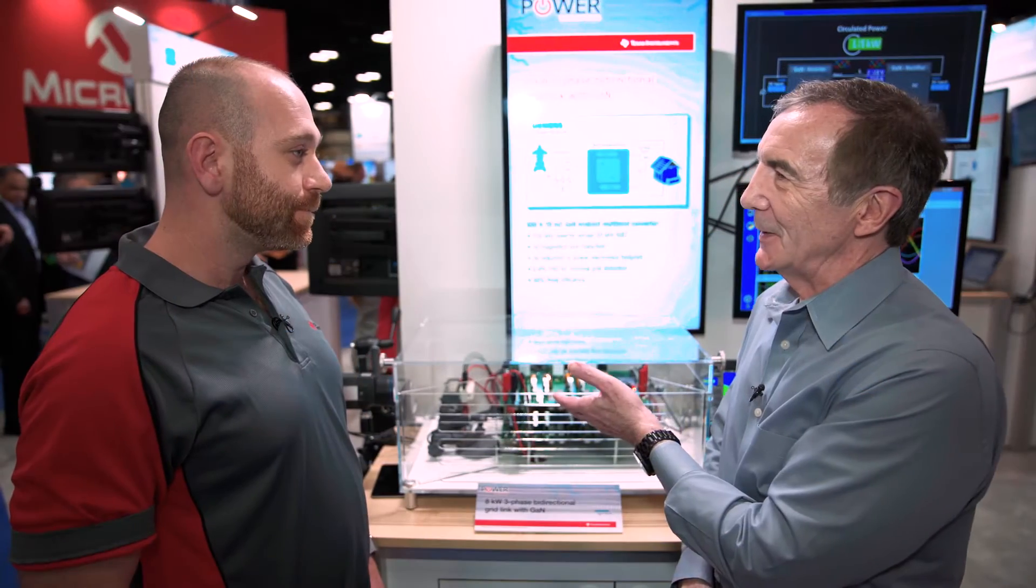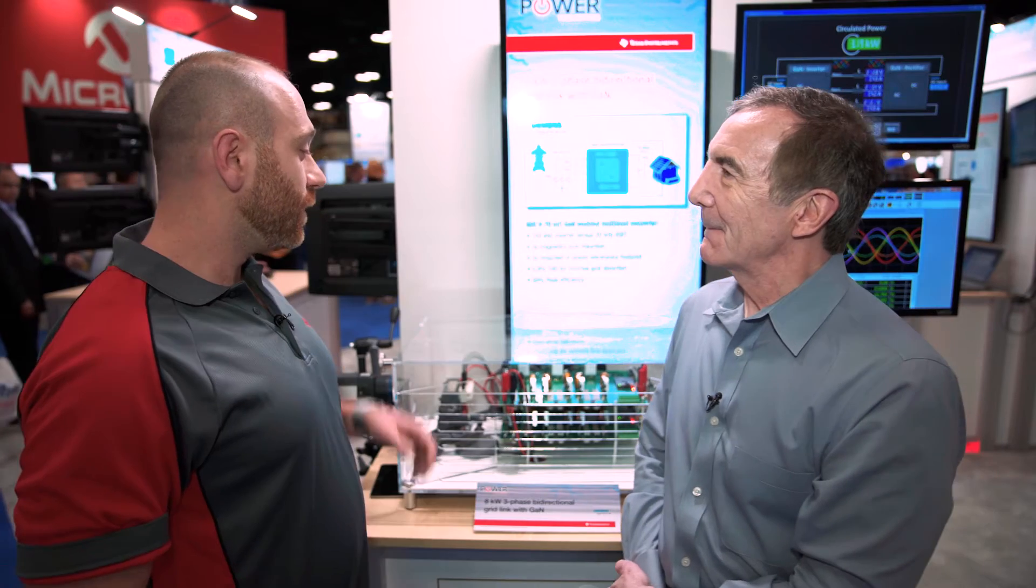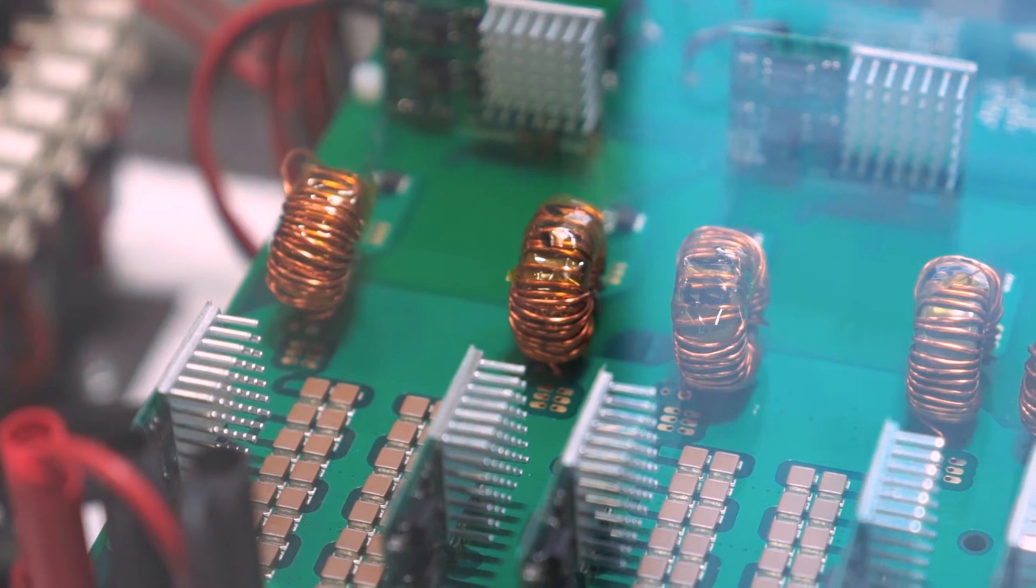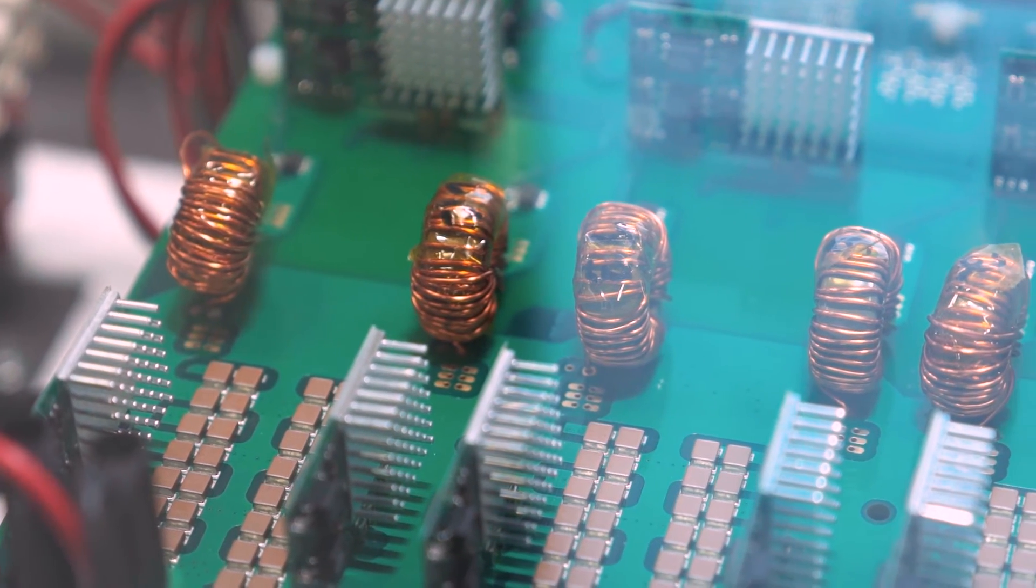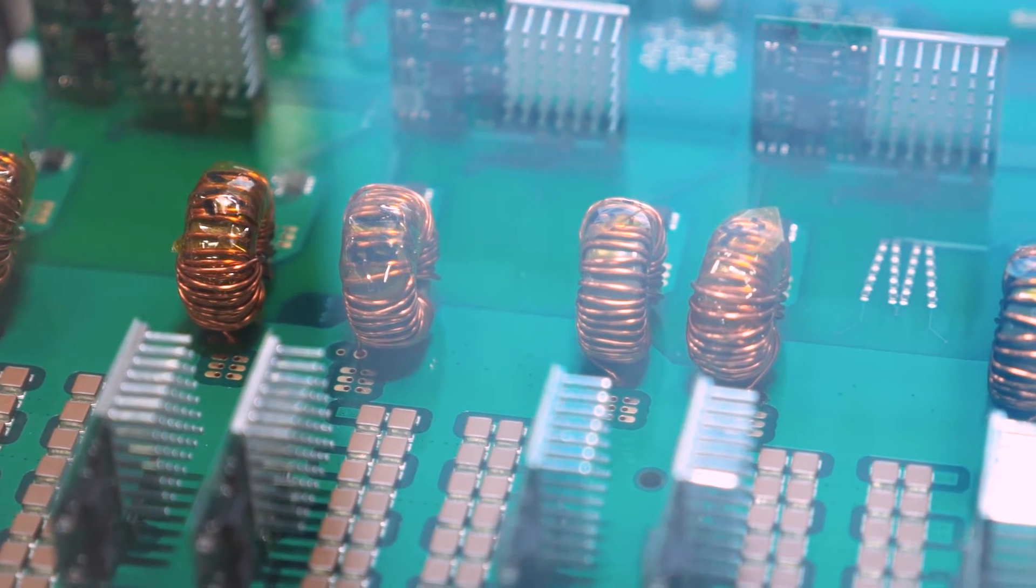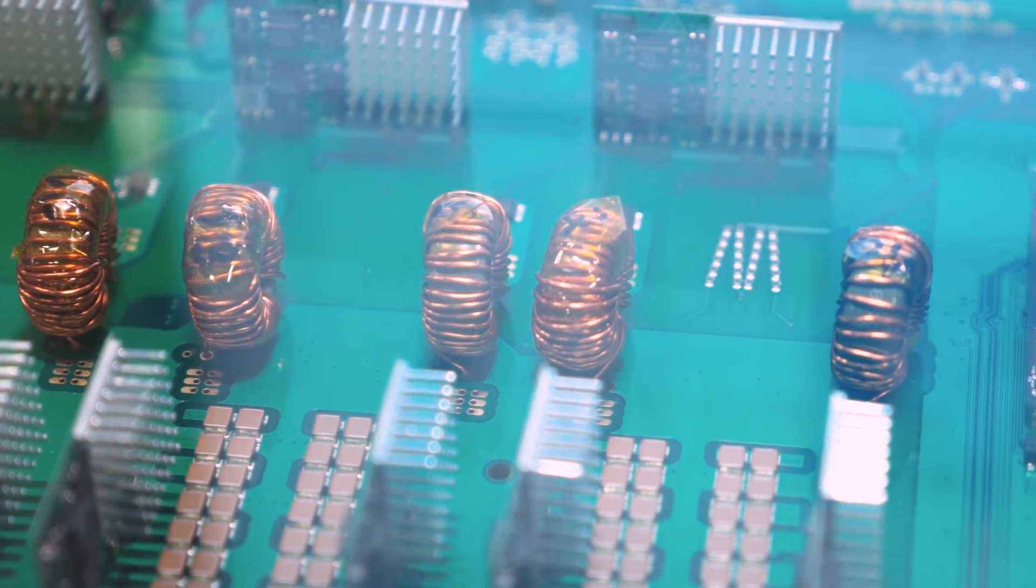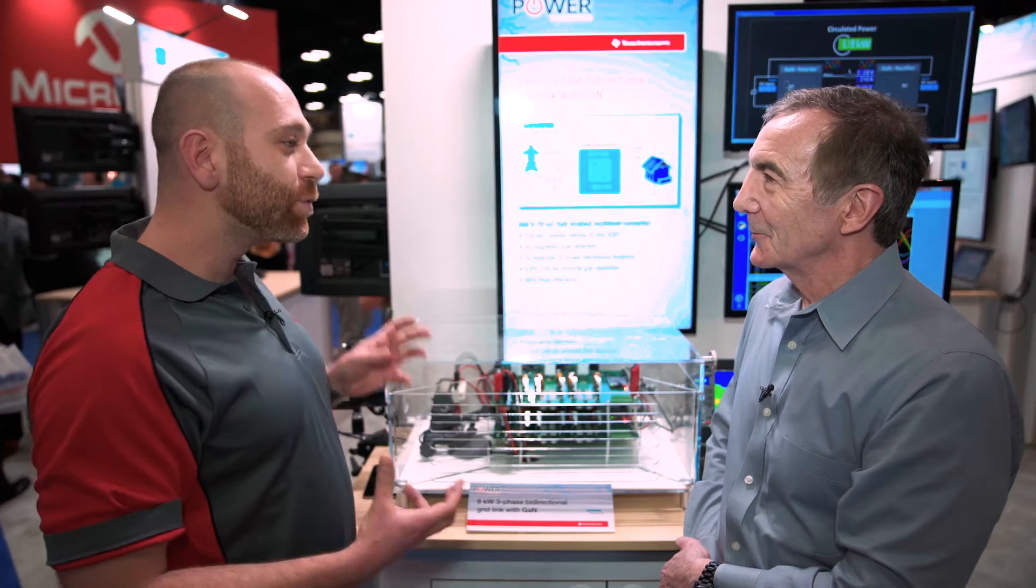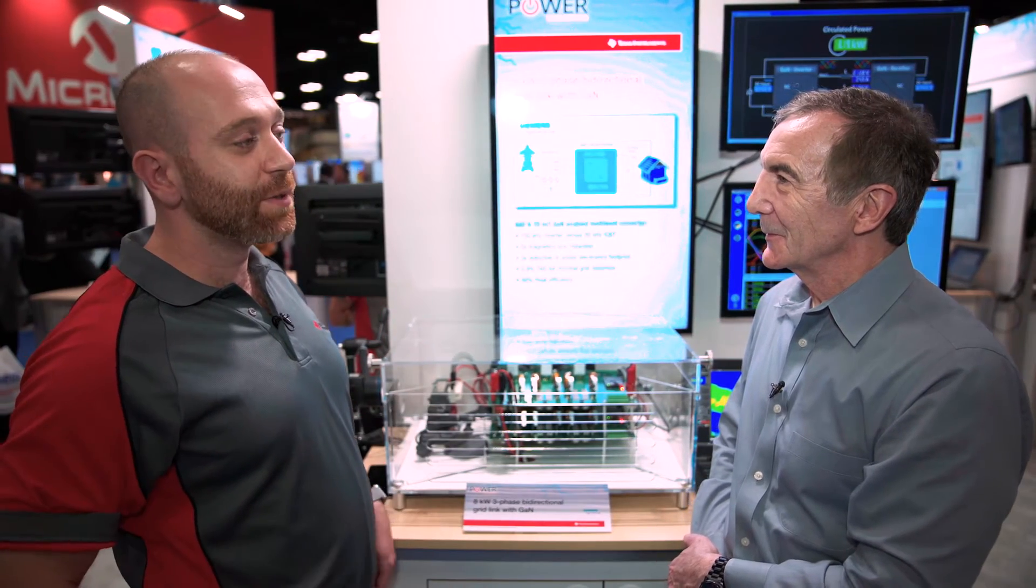If you were to try to do this with IGBT, how big would this be? Well, the inductors you can see here could be at least five times larger at 10 kHz. What about the whole package? Well, the package itself, if you look at the power semiconductor area, the footprint area increases by 300%. Oh, wow.